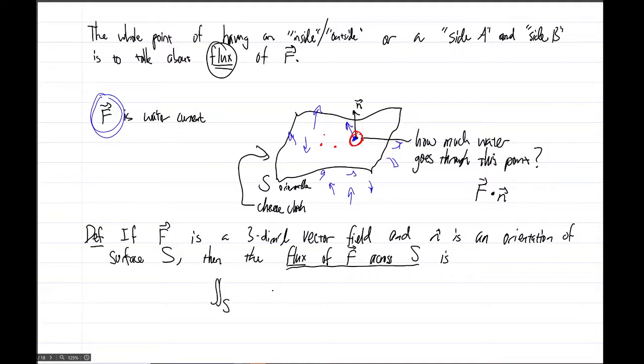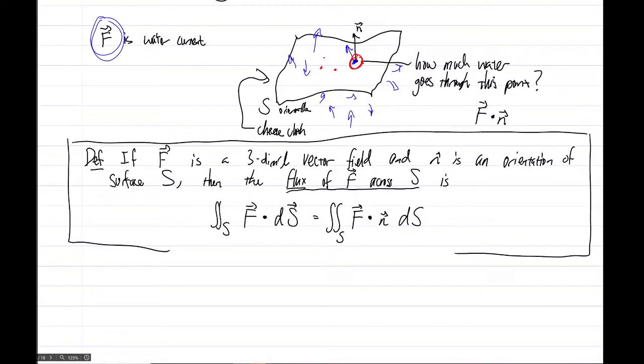Is the double integral over S of f dot dS with an arrow here. Now, and this is the double integral of f dotted with—this is how we end up implementing this—this is f dotted with the vector n over the surface S dS with no arrow. So there's a lot that we need to clarify. So okay, that's the official definition for us, but we've got some things we need to say about this. So first of all, you'll notice here that there's a dS with an arrow. Yeah, so dS with an arrow, you'll see eventually just becomes the orientation vector times dS without an arrow.